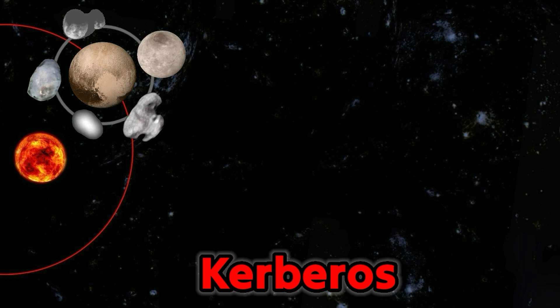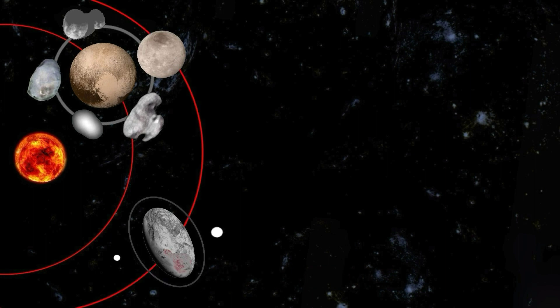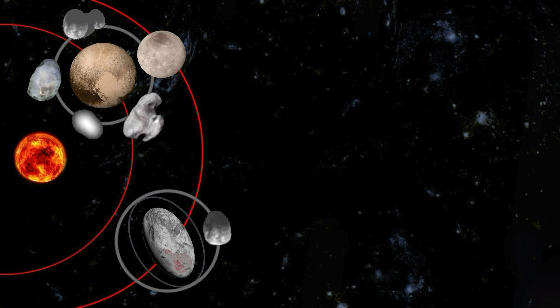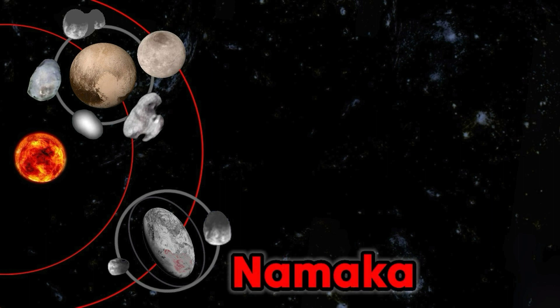Kerberos. Haumea has 2 moons: Hi'iaka, Namaka.